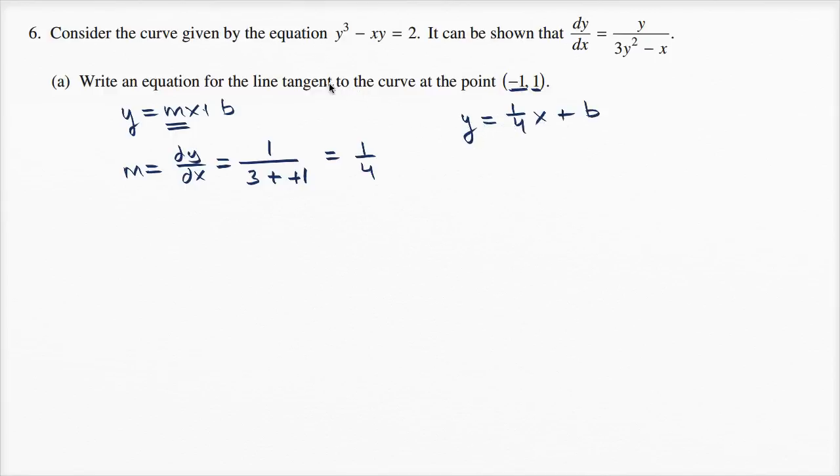This line is tangent to the curve, so it includes this point and only that point. So y = 1 when x = -1, giving us 1 = -1/4 + b.